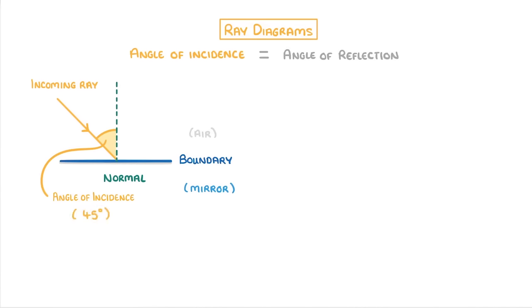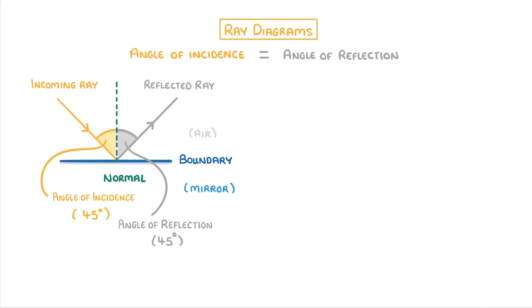So 45 degrees in this case. In the exam, you might have to measure this angle yourself using a protractor. Now, according to our rule, which says that the angle of incidence is always equal to the angle of reflection, this means that the angle of reflection must also be 45 degrees. And so we would draw our reflected ray out at 45 degrees from the normal. And finally, you need to know that the point where the incoming ray touches the boundary is called the point of incidence.